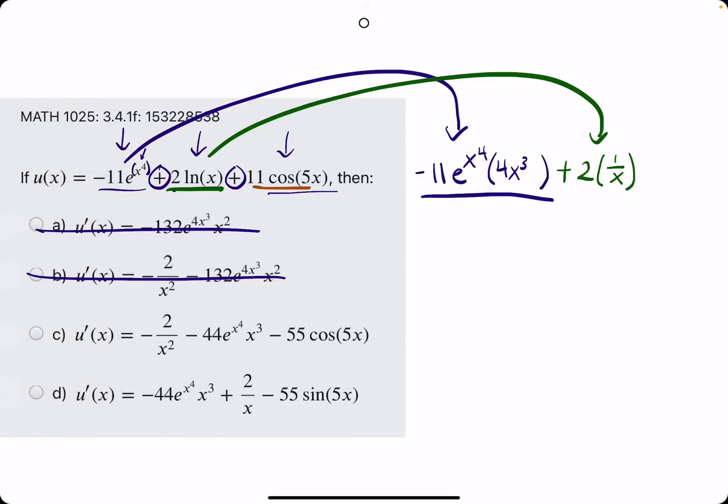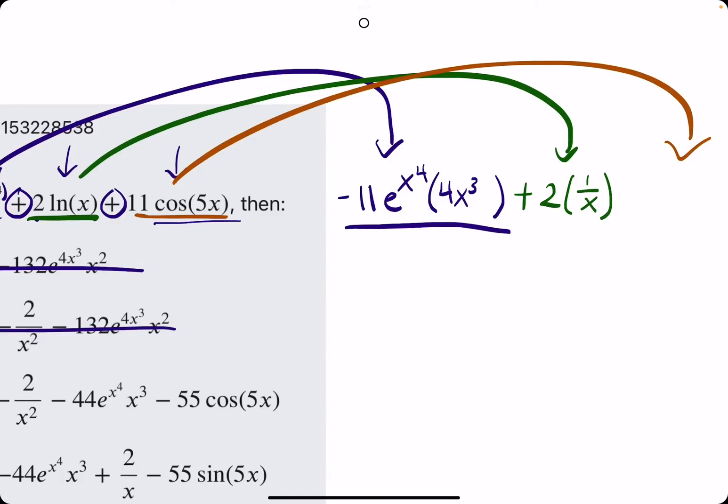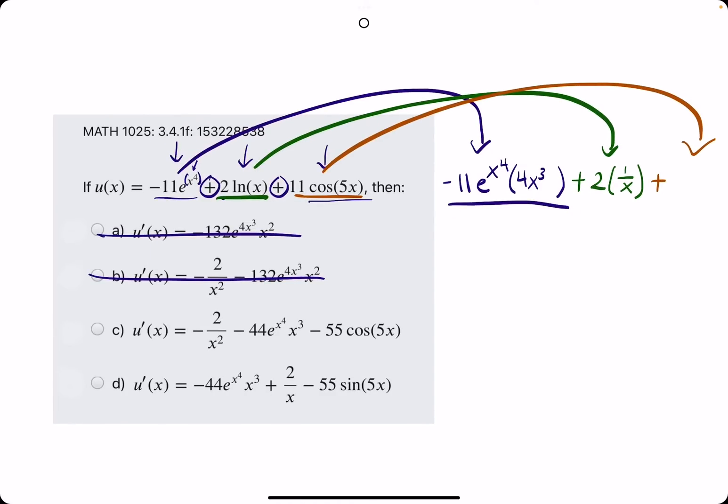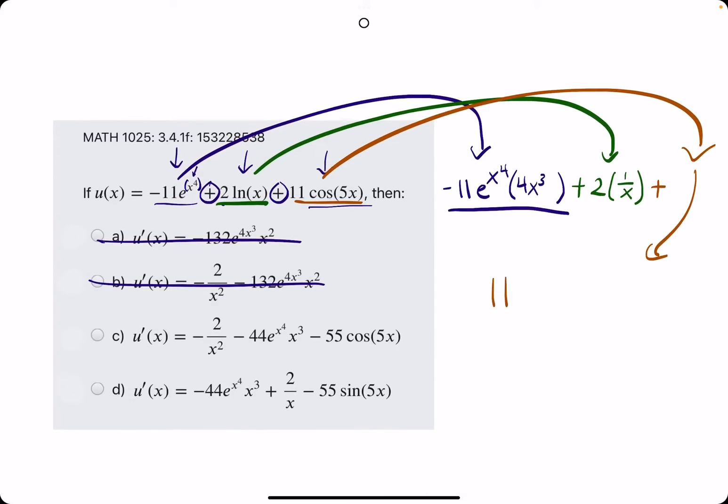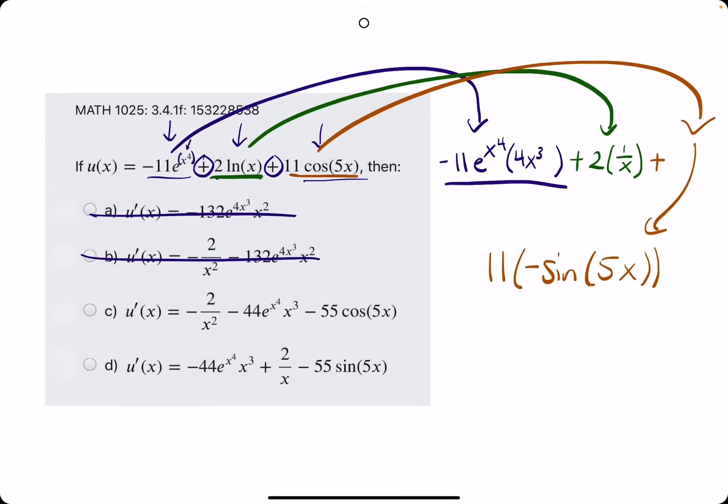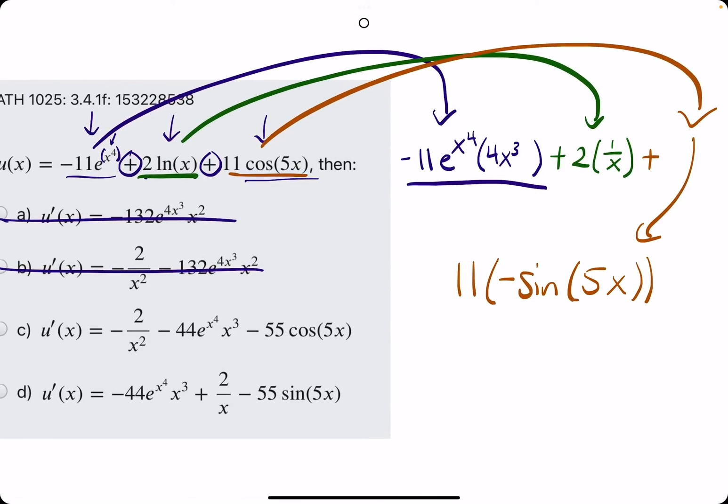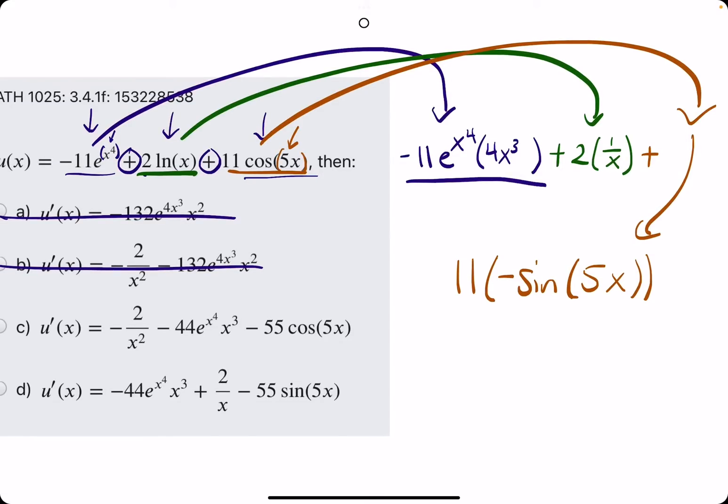And then, do a different color for the last one. So, we have 11 cosine of 5x. Again, it was separated by addition, so we keep the addition. And then, we keep the 11, because that was the coefficient. And then, cosine of something has a derivative of negative sine of something. So, I'm going to write this down here, just to save us some room. So, again, we keep the 11, and then cosine goes to negative sine of 5x. So, we keep the inside argument, the 5x, the same when we take the derivative of the outside cosine. So, this is what we have so far. We've only taken the derivative of the outside layer, though. The cosine, we still need to take the derivative of the 5x, the inside layer. So, 5x has a derivative of just 5.